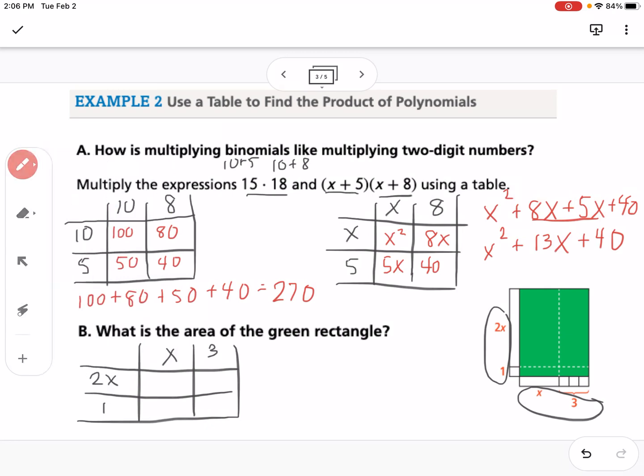I like to switch the color just so you can see that I'm multiplying here. So 2x times x is 2x squared, 2x times 3 is 6x, 1 times x is 1x, and 1 times 3 is 3. So this would be 2x squared, and then I'm going to combine those two to make it 7x plus 3. That would be the area of the rectangle.